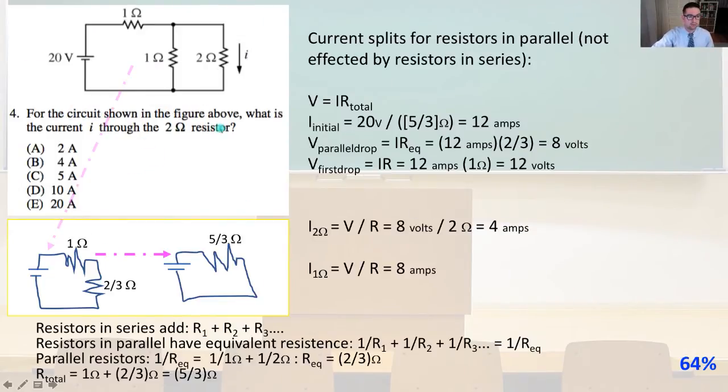So number 4. For the circuit shown in the figure above what is the current I through the two omega resistors. So that's this resistor right here. So the current splits for resistors in parallel, it's not going to be affected by resistors in series. So we know that the voltage equals IR total, the total resistance. And to get that total resistance, let's convert this to a simpler circuit. So if we convert this from the resistors that are in parallel, we can combine them with the equivalent resistance. 1 over R1 plus 1 over R2 plus 1 over dot dot dot equals 1 over R equivalent.